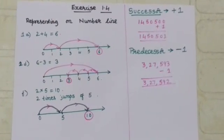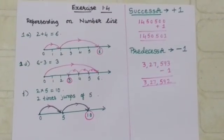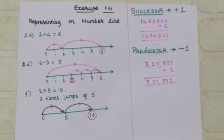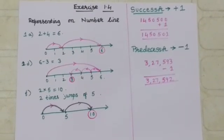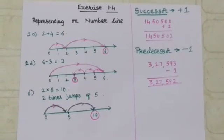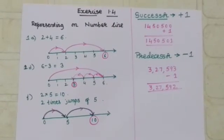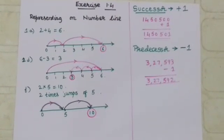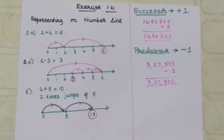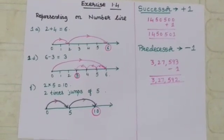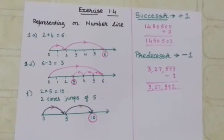2 plus 4 is 6. You will draw a number line: 0, 1, 2, 3, 4, 5, 6, and so on. Then from 0 to 2. And because it is addition, we move forward 4 steps. 2 plus 4, so you will come to 6. So the answer is 6.